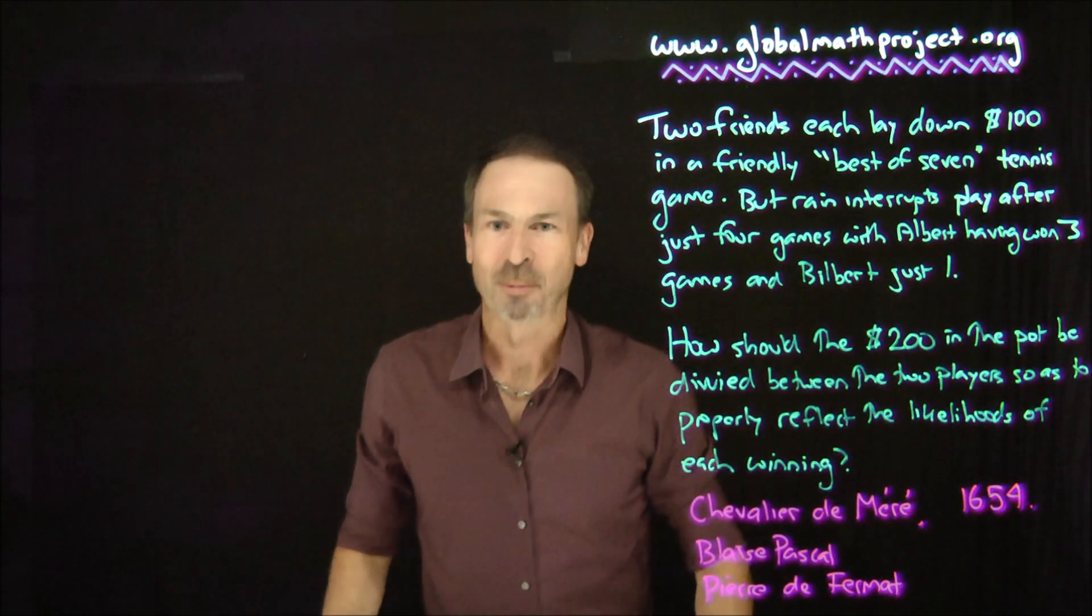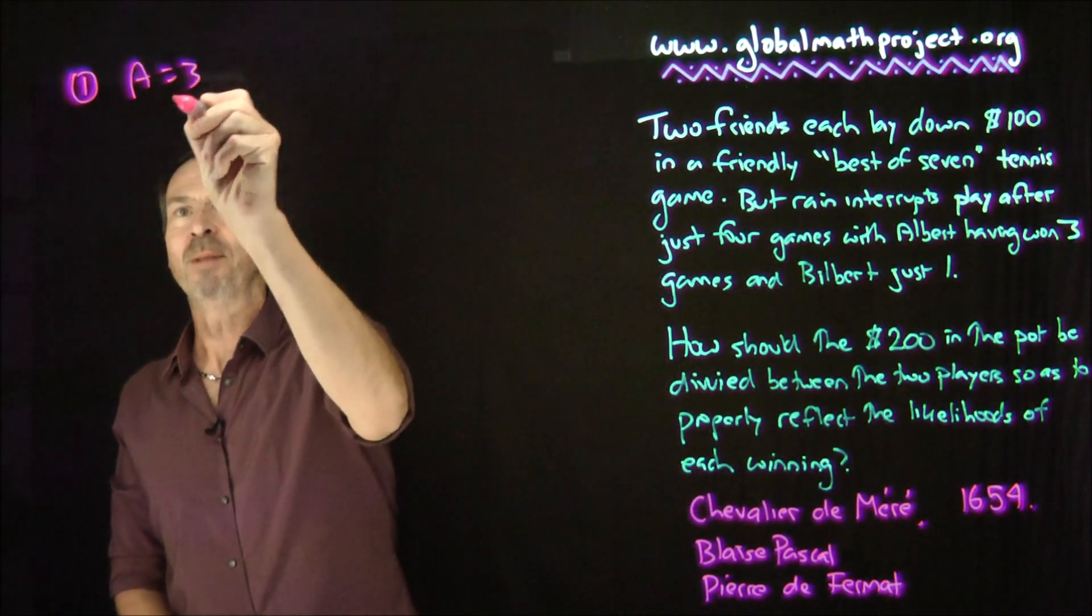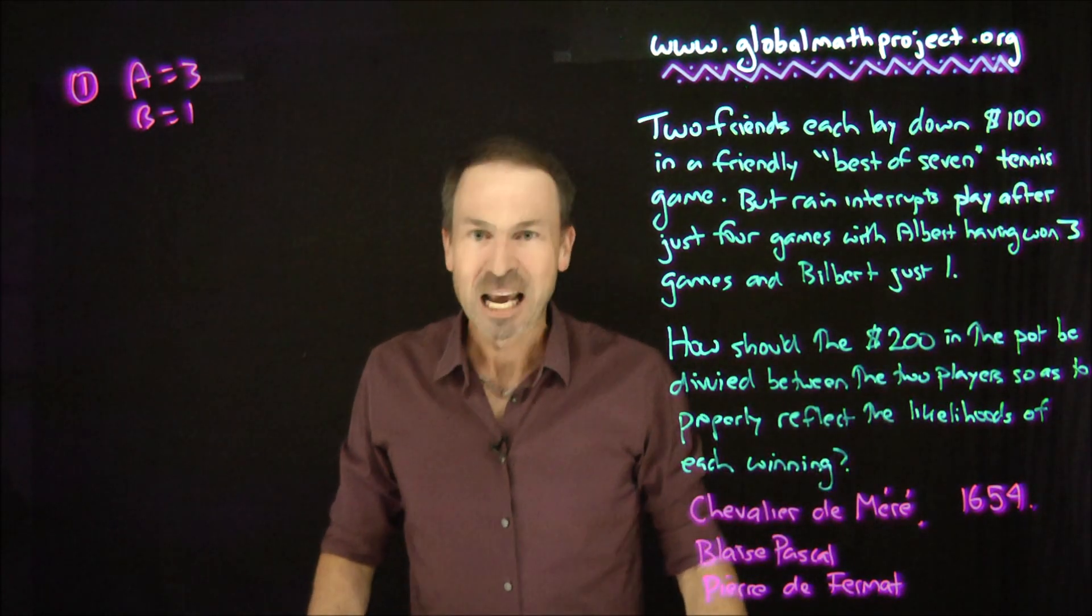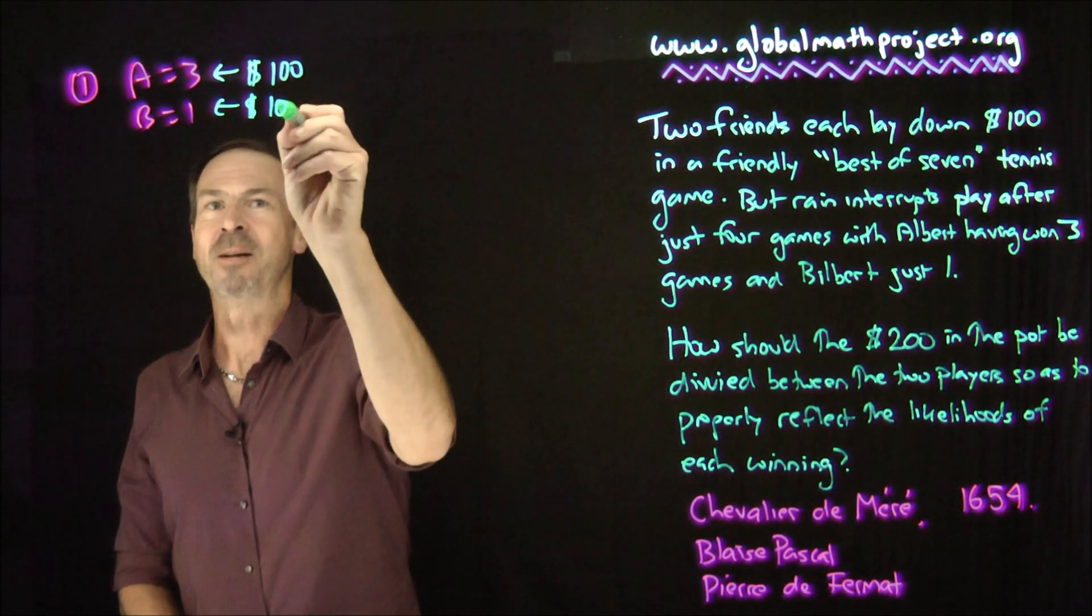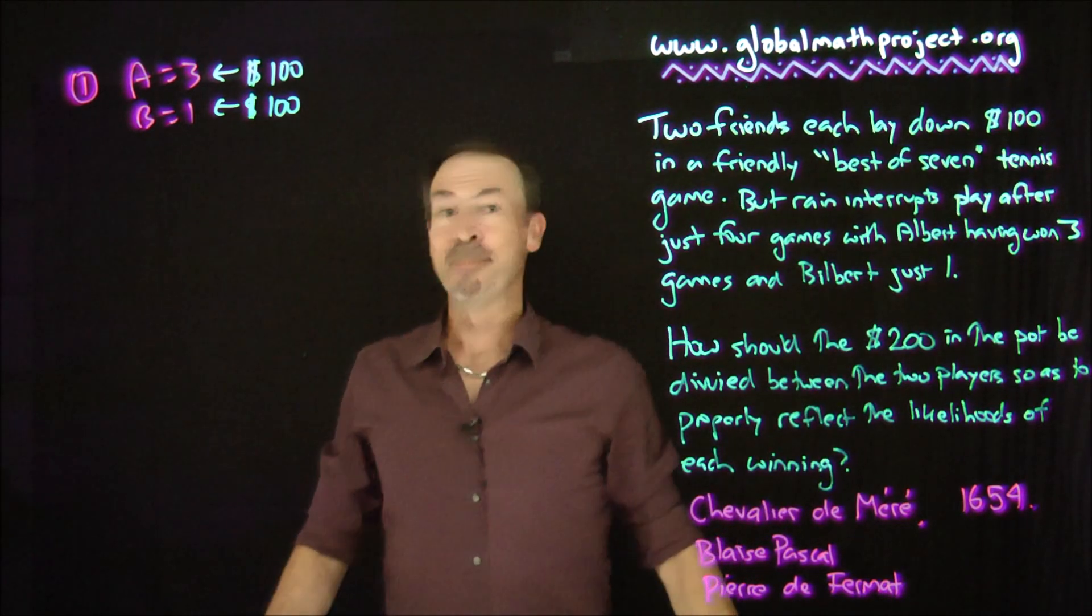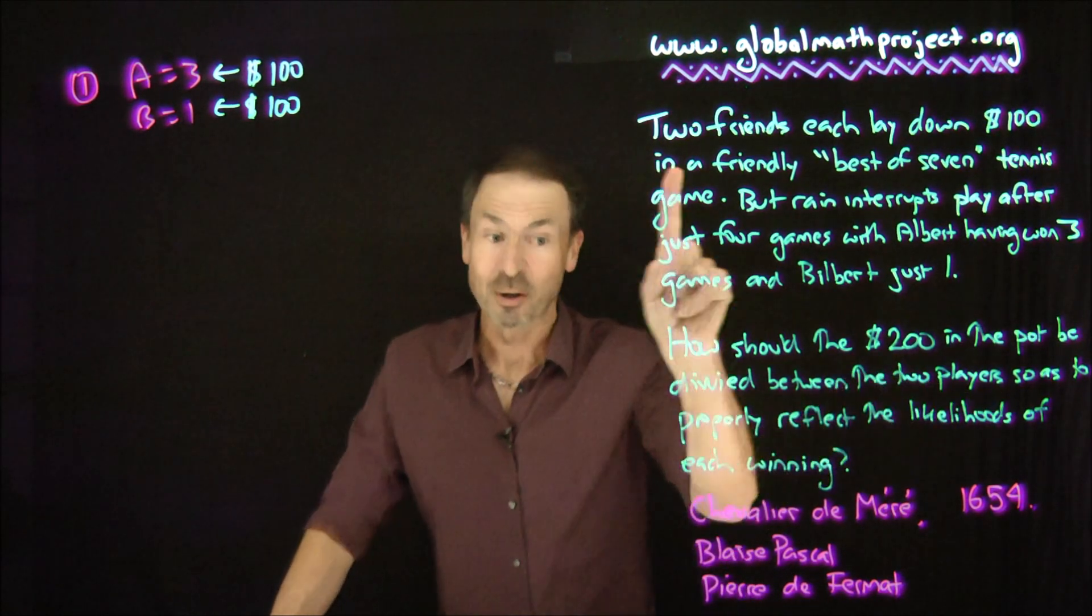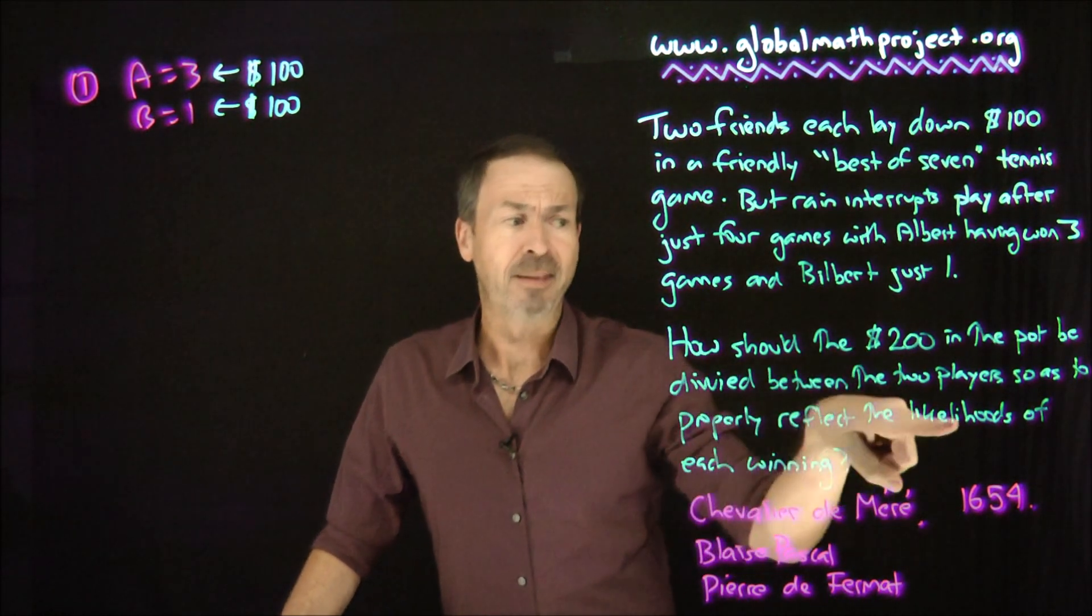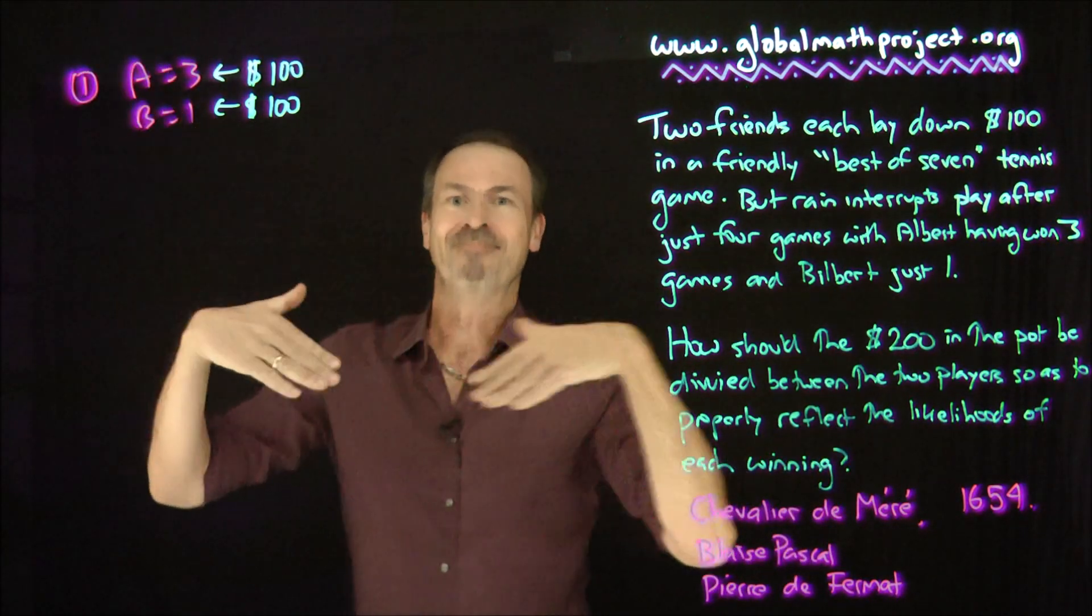Four different answers to this problem of points. Seven games about to be played, interrupted after four. Answer number one: the naive answer would be just give each person their money back. Give Albert his hundred dollars back. Give Bilbert his hundred dollars back and be done with it. Seems fair. Just come back and play another day. But people object because it's not actually answering the question. Just ignore the likelihoods of each winning. Completely ignore the question. Not a satisfactory answer.